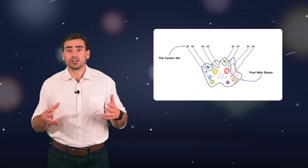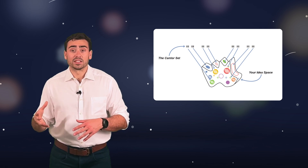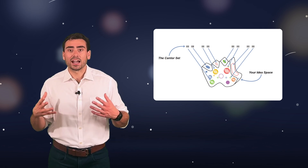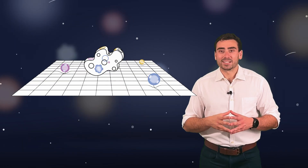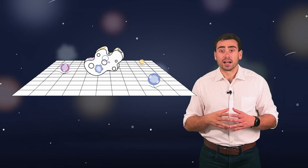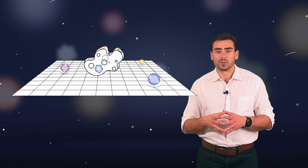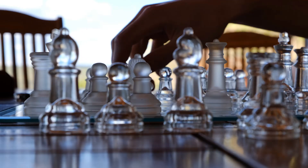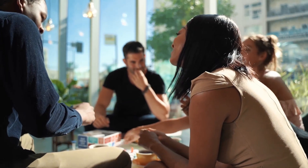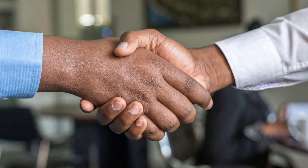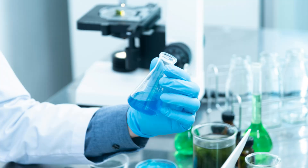Your idea space functions in much the same way. Like the Cantor set, it has zero measure — it doesn't occupy any physical space in a way that can be measured, yet it is uncountably deep. Although your idea space has no direct effect on space-time, it doesn't exert any gravitational force or emit any light, yet it is undeniably real. It shapes your perceptions, decisions, and interactions. In a way, it indirectly influences the physical world through your actions and contributes to the macro-idea spaces of our world, such as language, money, social norms, laws, governments, and even scientific theories.